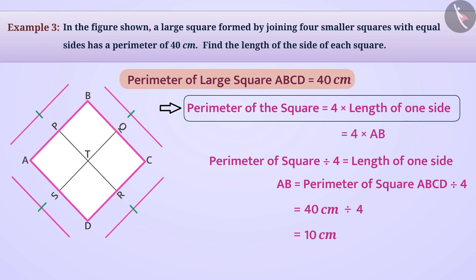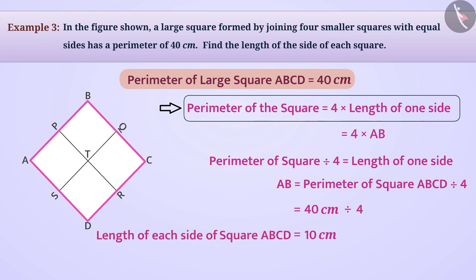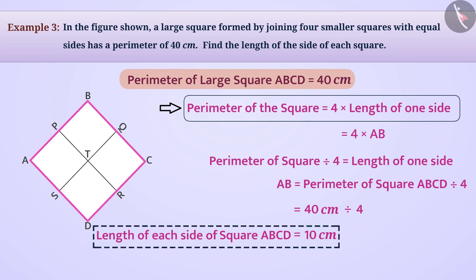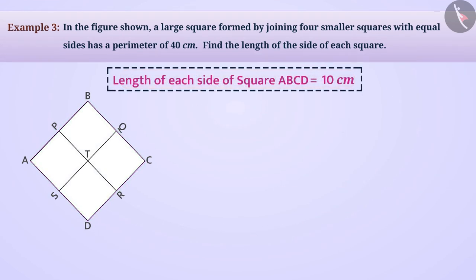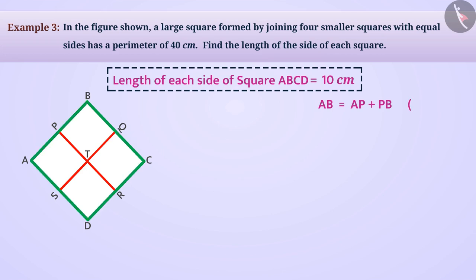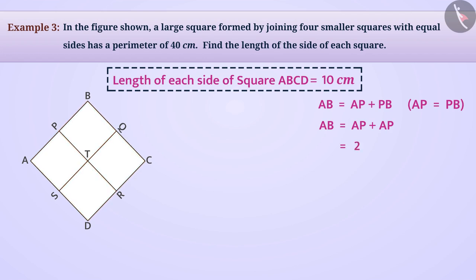The length of each side of the square is the same, so the length of each side of square ABCD is 10 centimetres. By looking at the figure, we find that AB equals AP plus PB. Since the large square is made up of 4 smaller squares with equal sides, AP equals PB, so AB equals AP plus AP, which equals 2 multiplied by AP.